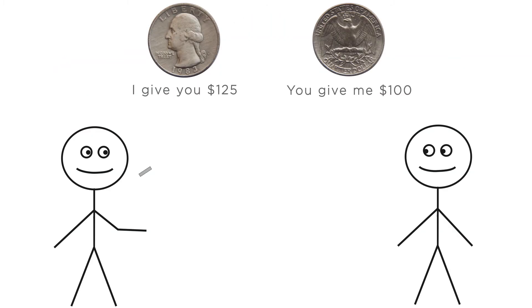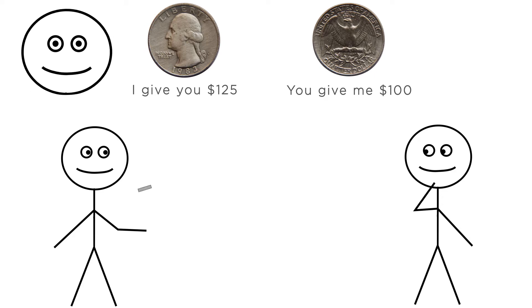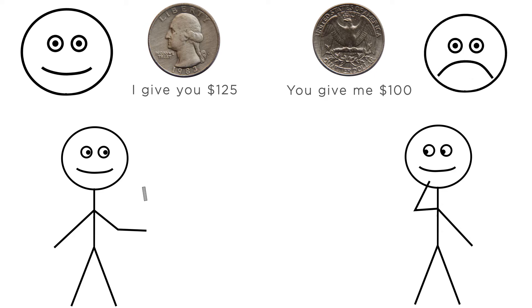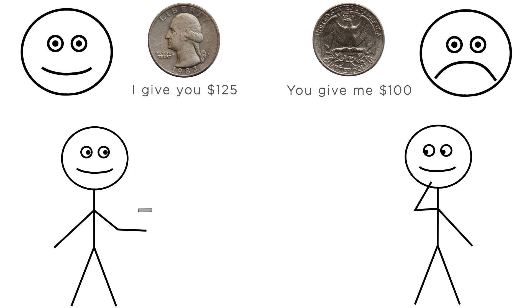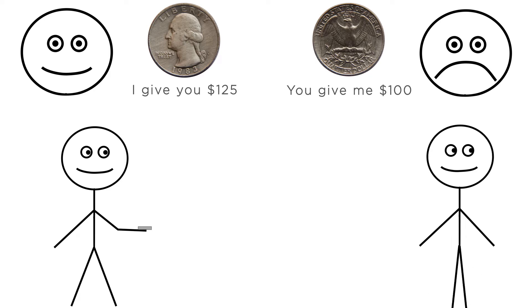Even though your wealth would be expected to be higher if you take this bet, your utility would be expected to be lower. Unlike with expected value, expected utility doesn't weight gains and losses the same. So in the example we use here, the extra $125 doesn't make you as much happier as losing $100 makes you sadder. The gain in utility from getting $125 is smaller than the loss in marginal utility from losing $100. So you don't take the gamble.